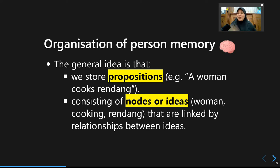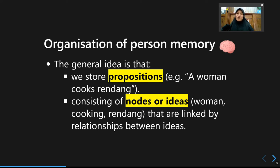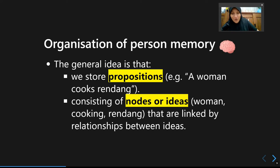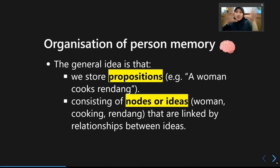In a sentence like 'a woman cooks rendang,' we have three nodes — three different concepts that we try to store together as associative concepts that form propositions. Those concepts involve 'woman,' 'cooking,' and 'rendang.' These nodes are linked by the idea, so we keep the link or the association between these ideas.